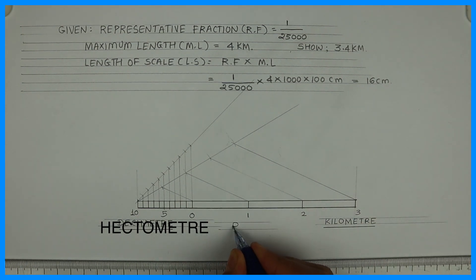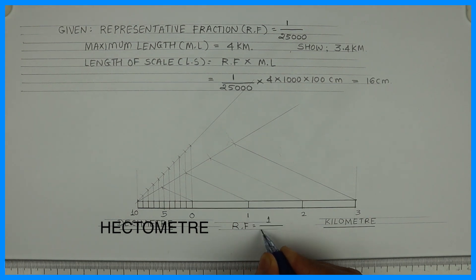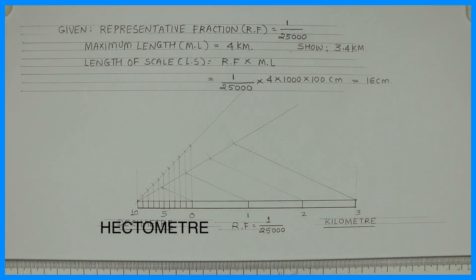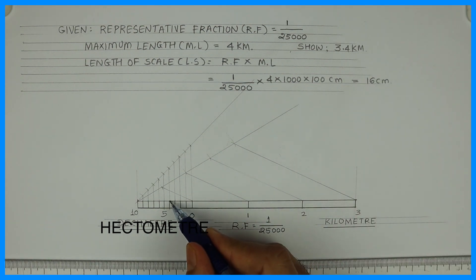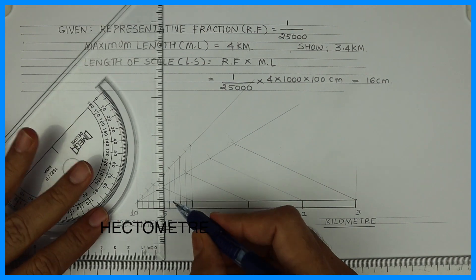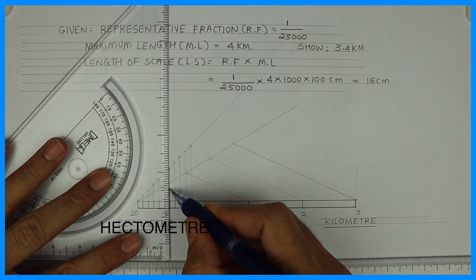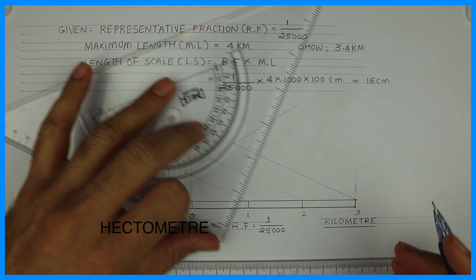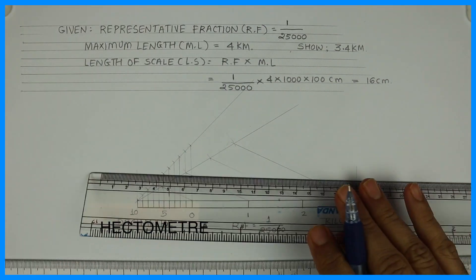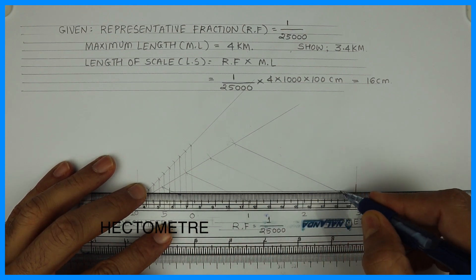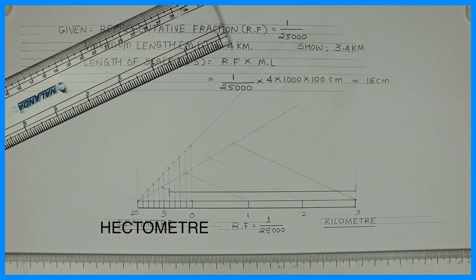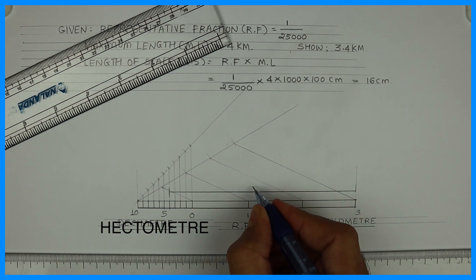I will write RF over here — RF 1 upon 25,000 — and we are done with the scale. Now we need to do the marking for 3.4 kilometers. We will take 1, 2, 3, 4 hectometers and 3 kilometers, and we will draw a horizontal line. So you will get 3.4 kilometers.